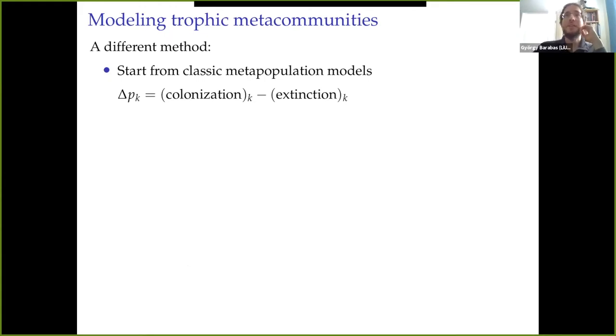The starting point is going to be classical metapopulation models of the Hanski-Ovaskainen style, called Levins-style metapopulation models, where the variable of interest is not the abundance of a species in a patch k, but the probability that the given species is actually present in patch k. So this p_k is a number between zero and one measuring the likelihood that if we go to that patch at a given moment, then we'll find our species there. And delta p_k is the change from one moment to the next, and that is given by a balance of colonization and extinction.